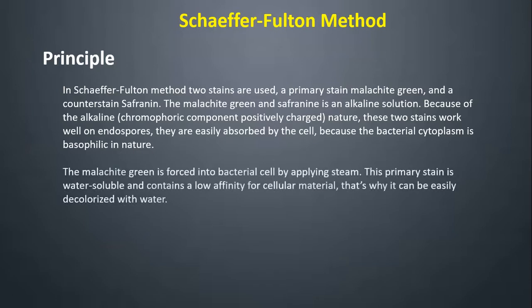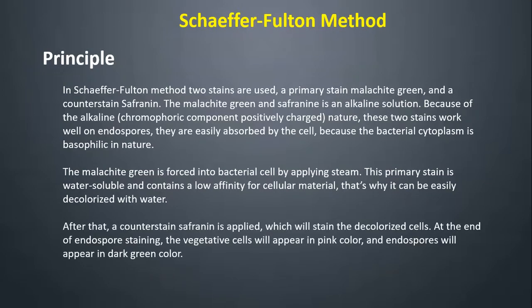Malachite green is forced into the bacterial cell by applying steam. This primary stain is water-soluble and has a low affinity for cellular material, so it can be easily decolorized with water. After that, a counter stain, safranine, is applied to stain the decolorized cells. At the end of endospore staining, the vegetative cells appear pink and the endospores appear dark green.